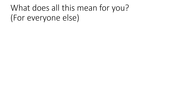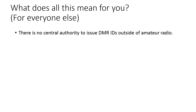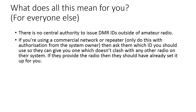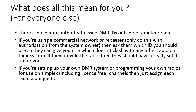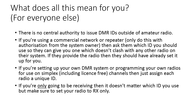For everyone else: there's no central authority to issue DMR IDs outside of amateur radio. If you're using a commercial network or repeater — which you should only do with authorization from the system owner — ask them which ID you should use so they can give you one that doesn't clash with any other radio on their system. If they provide the radio, they should have already set it up for you. If you're setting up your own DMR system or programming radios for use on simplex including license-free channels, just assign each radio a unique ID. If you're only receiving, it doesn't matter which ID you use, but make sure to set your radio to RX only so you don't accidentally transmit.